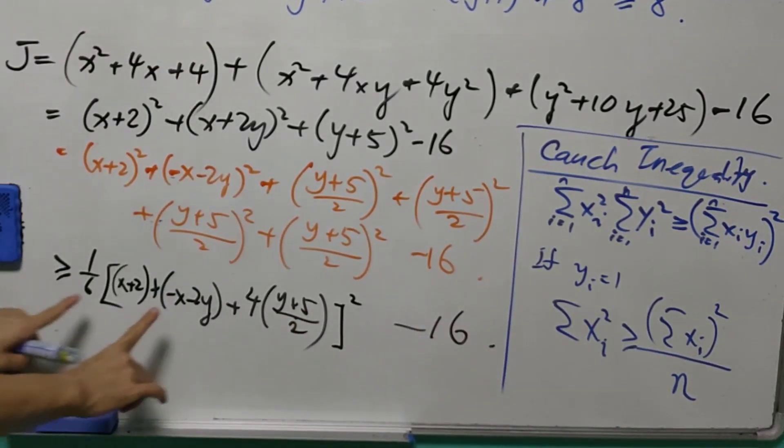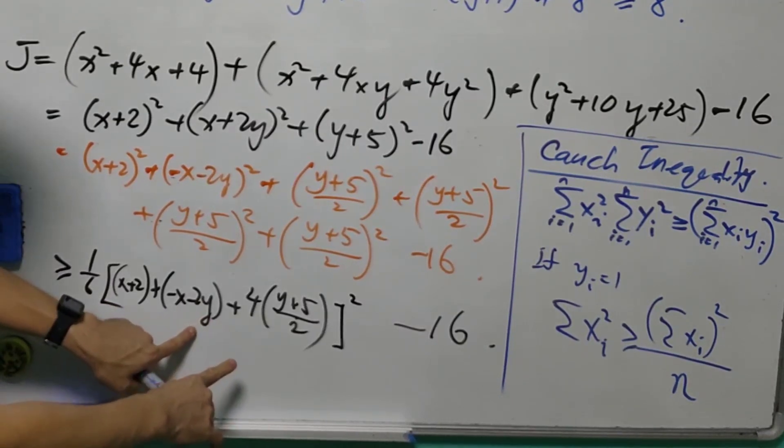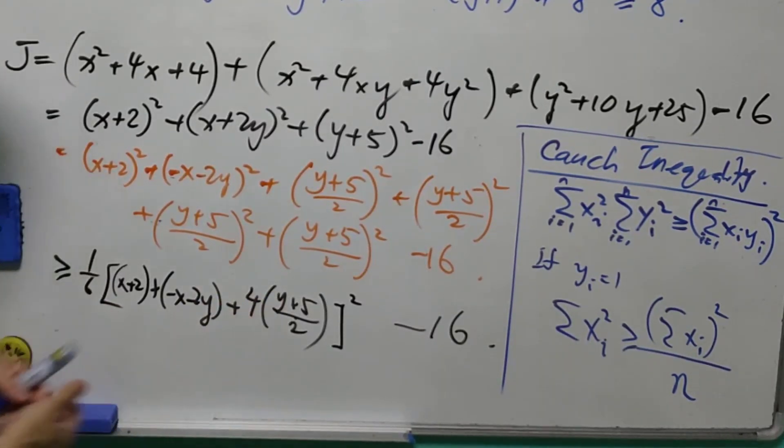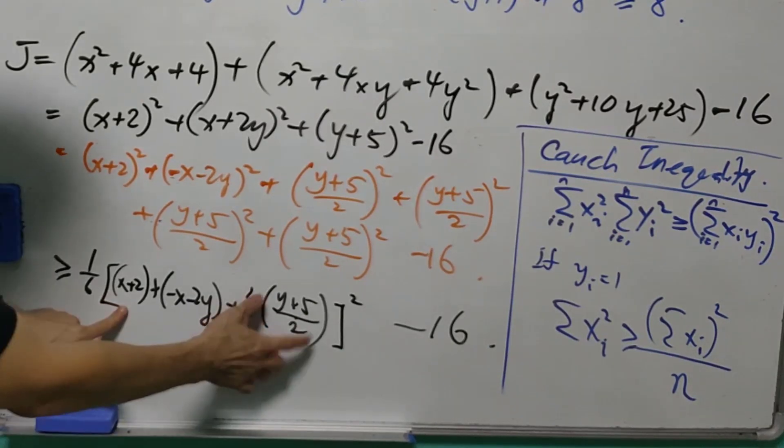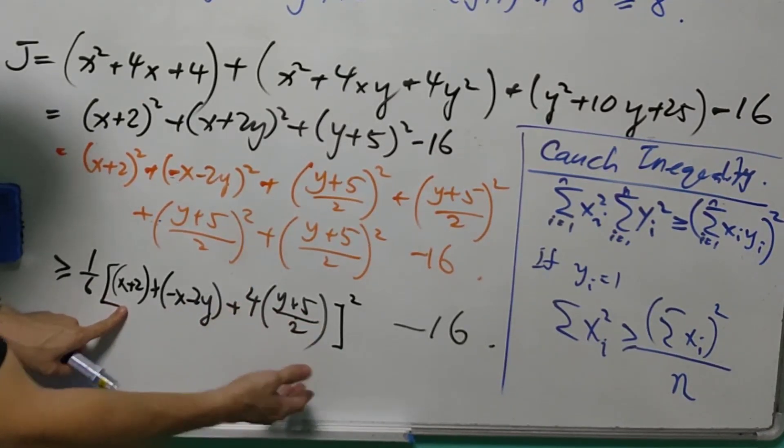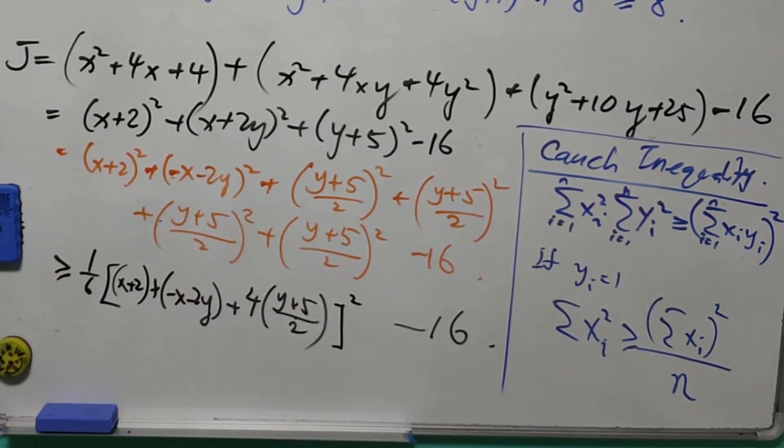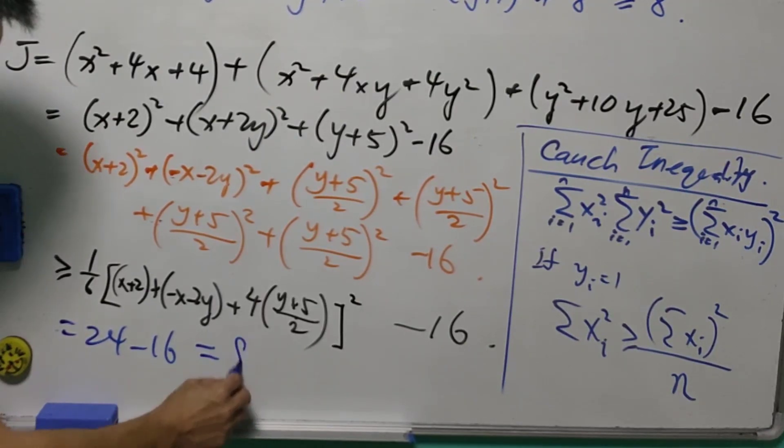Let's copy it. When we do the calculation, x disappears, negative 2y and positive 2y disappear. What we left is 2 and 10. That is 12. 12 squared is 144. 144 divided by 6 is 24. So this is 24 minus 16. That is equals to 8.